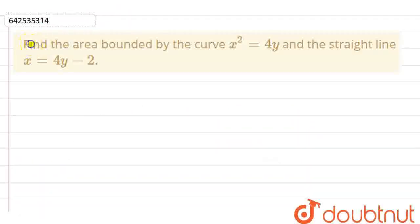Hello everyone, in this question we have: find the area bounded by the curve x square equals 4y and the straight line x equals 4y minus 2. So we have first curve as a parabola x² = 4y and second we have a straight line that is x = 4y - 2.